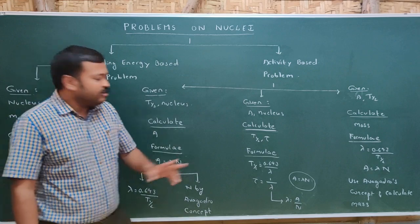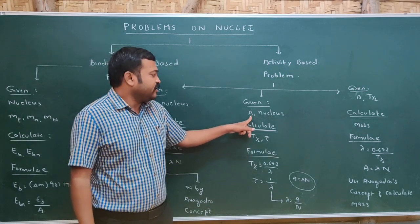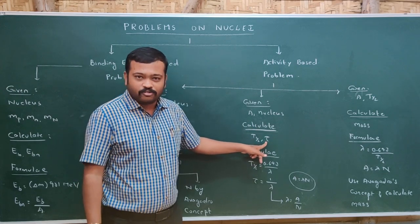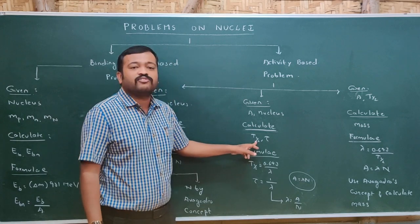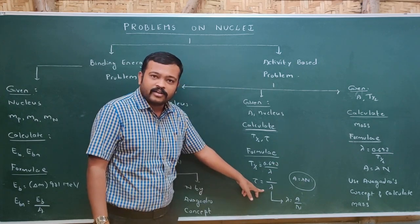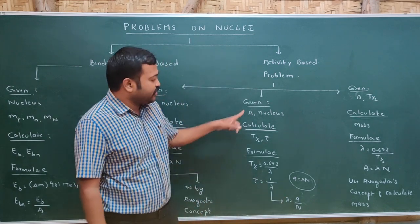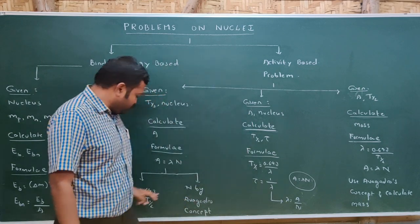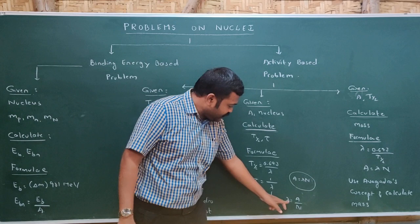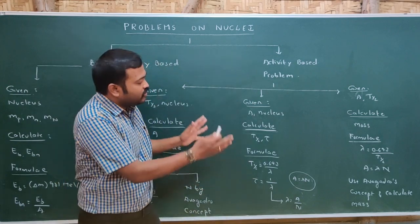The second type of activity problem is the reverse of the first. Here, half-life will be asked and activity will be given. The formula for T-half is 0.693 divided by λ, and mean life is 1 by λ. Since half-life is unknown, we cannot directly use that formula for λ. Instead, use A = λN, so λ = A divided by N. First calculate λ, then substitute to get half-life and mean life.